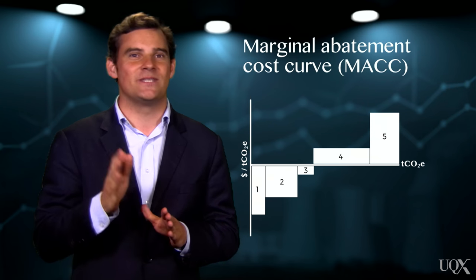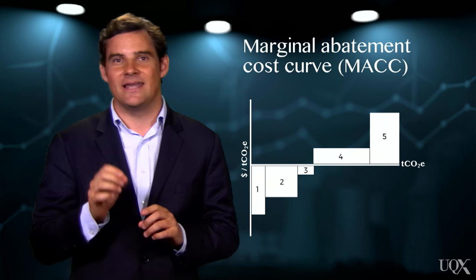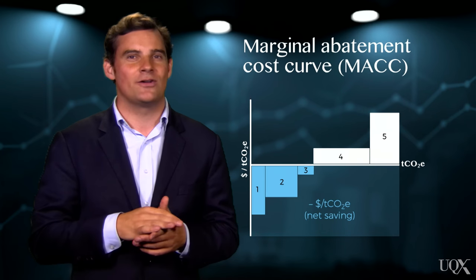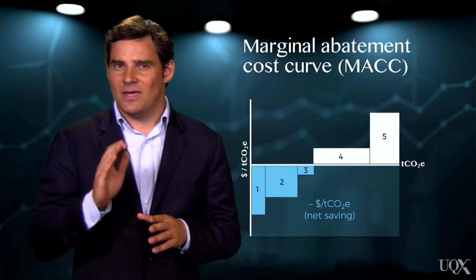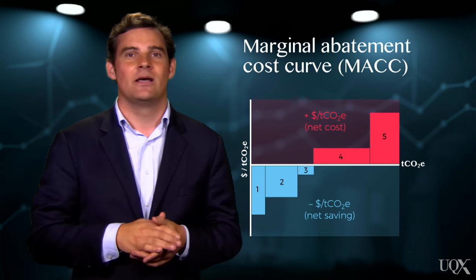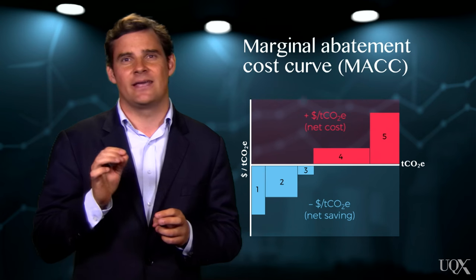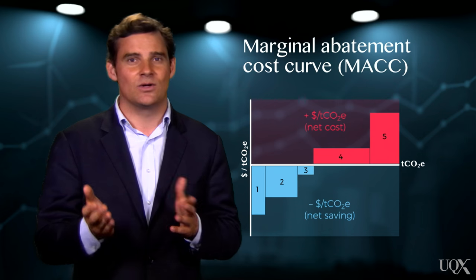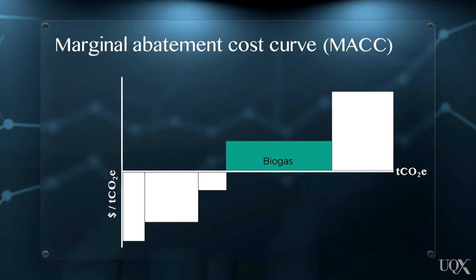Importantly, projects that present savings — that is, negative abatement costs — are positioned below the horizontal axis and should be prioritised for implementation. Those that appear above the horizontal axis should be evaluated carefully against the marginal cost of other compliance options, such as buying allowances or offsets on the carbon market. For example, our biogas project has a marginal cost of $16 per tonne. However, if offsets are cheaper at, say, $10 per tonne, then the organisation would first choose to buy offsets, as they will save $6 for every tonne of CO2 equivalent compared to the biogas project.